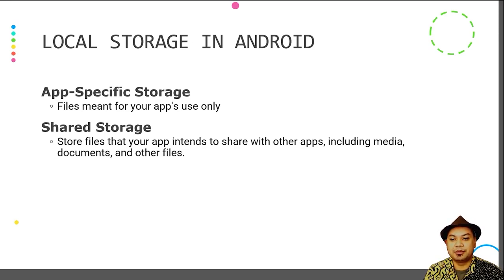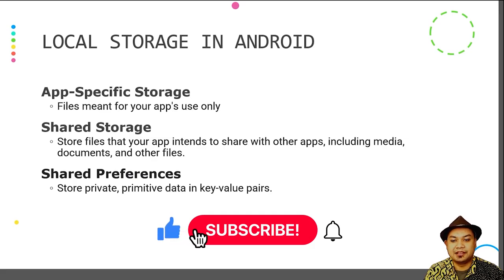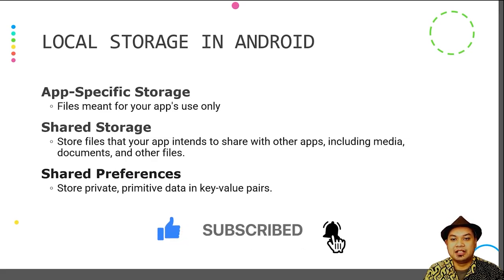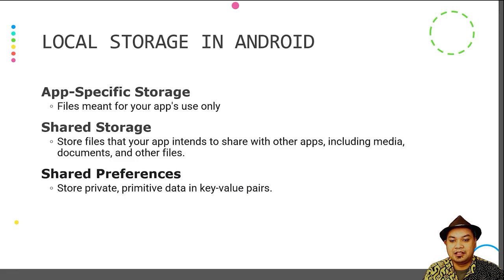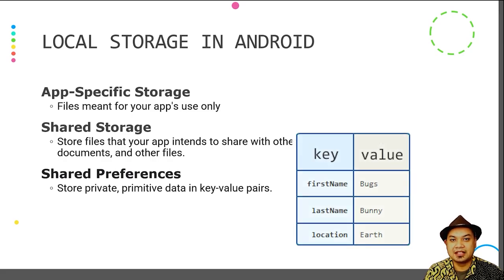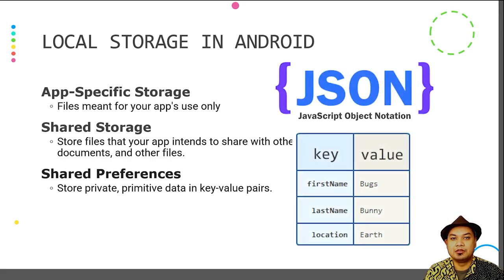There is also a scheme called shared storage. The shared storage scheme will permit the application files to be shared among other applications inside the user device. It is intended for the application to share its files with other applications, including media, documents, and other files. There is also Shared Preferences, where this API allows data to be stored inside the mobile application. The type of data stored here is primitive data, usually stored in key-value pairs like JSON data, using a key and value like a hash, stored inside the settings or preference area of the Android device.